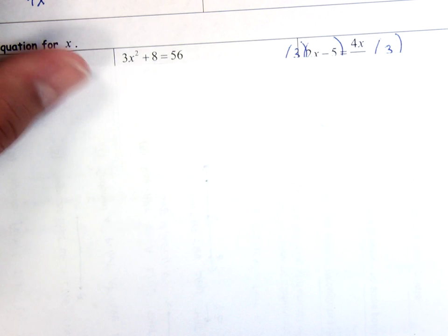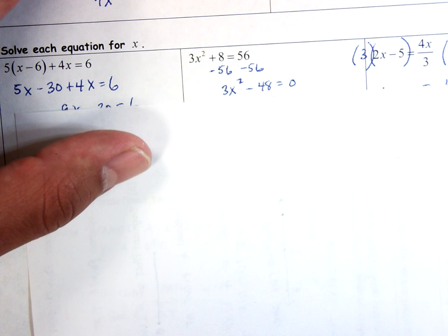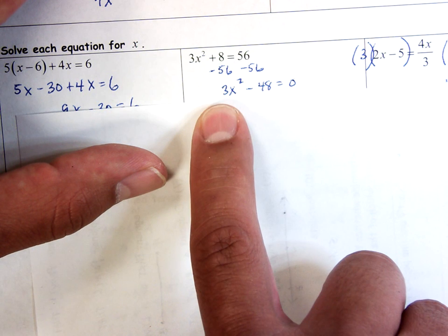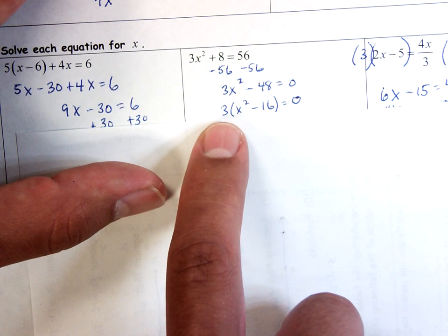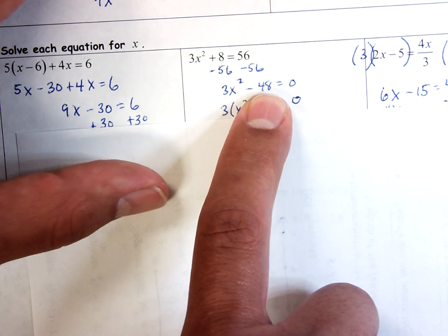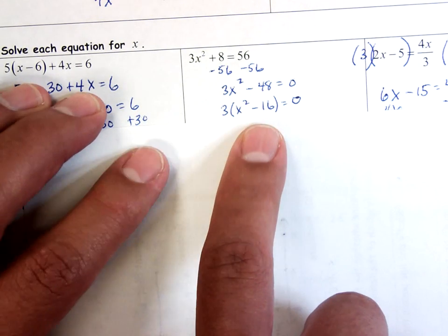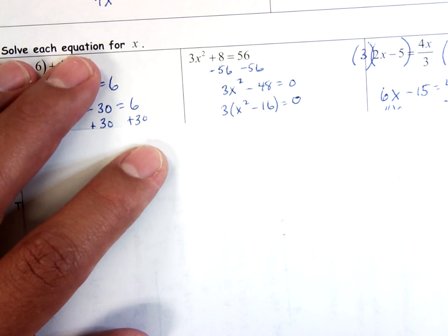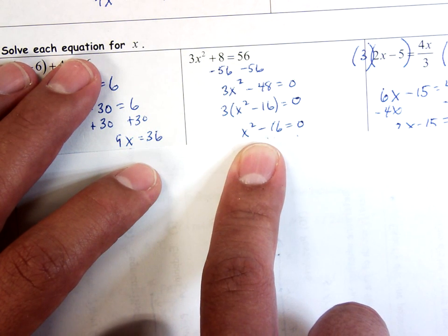Over here, I subtract 56 from both sides and I get 3x² - 48 is equal to 0. I factor out a 3, I have a 3 here, I have 48 here, they both share a 3, I could factor out a 3. So what's 3 times x²? It's 3x². What's 3 times negative 16? It's negative 48. So I haven't changed it, I just rewrote it. So now I have two products, I have 3 times x² minus 16 is equal to 0. So if two things are multiplied together and it equals 0, one of them must be equal to 0. Obviously 3 is not equal to 0. So it must be that x² minus 16 equals 0.